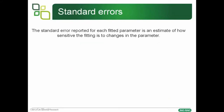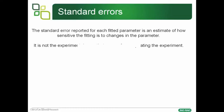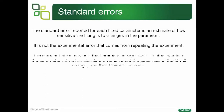The standard error can be generated for each fitting parameter, and it's an estimate of how sensitive the fitting is to changes in that parameter. This is distinct from an experimental error that comes from repeating experiments. The standard error tells us if the parameter — for example Ka or Kd — is significant. In other words, if the parameter has a low standard error, if it's varied, the goodness of the fit will vary and the chi-squared will vary.